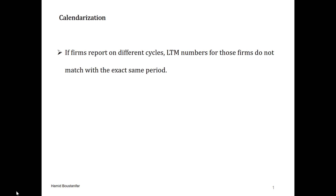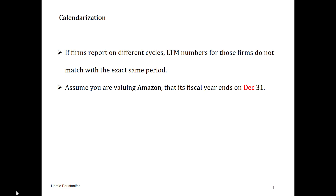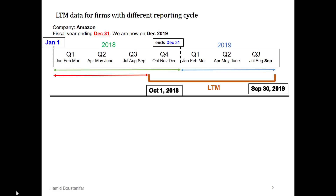As it will be clear soon, the last 12-month numbers for two companies that are reporting financials based on two different cycles are not telling us the relevant numbers for exactly the same periods. For example, assume that we are valuing Amazon, which reports for the fiscal year ended December 31st — the same as the calendar year. Also assume that as a comparable company, you are using Walmart, whose fiscal year ends on January 31st instead of December 31st. Let's go and see what happens if we compute the LTM data for these two companies.